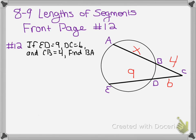Now, based on the formulas that I gave you, we know that the formula for this is outer times the whole of one secant is equal to the outer times the whole of the other secant.